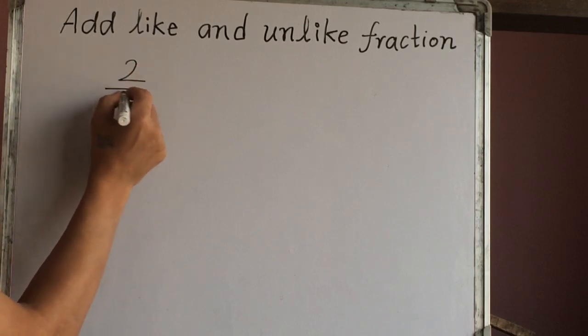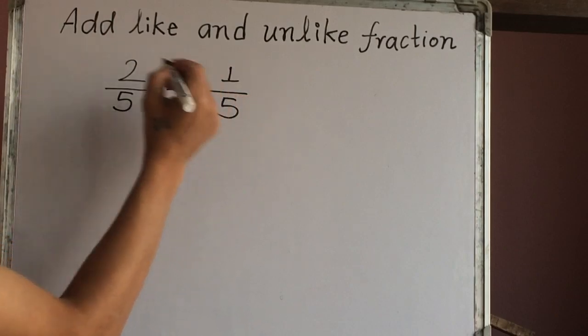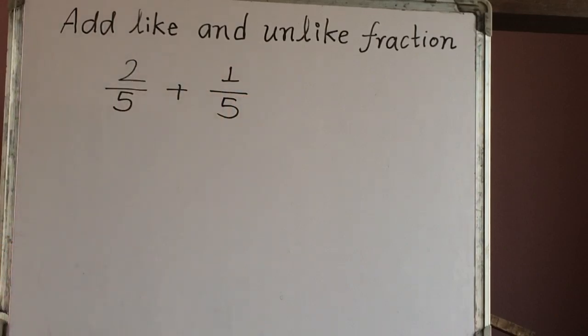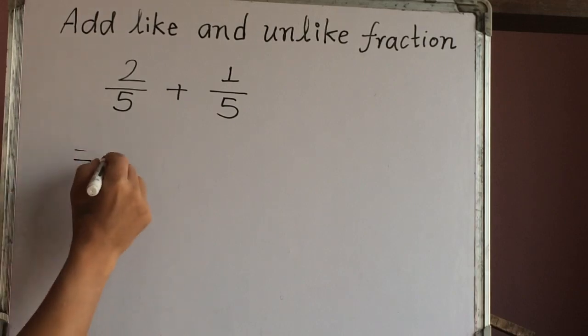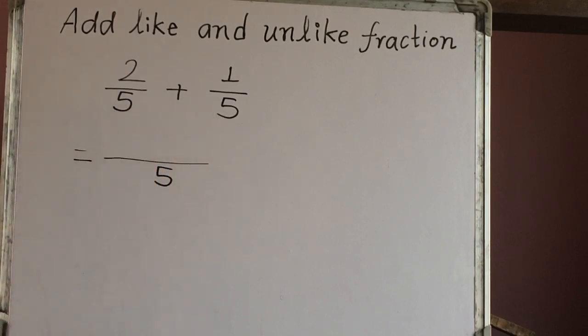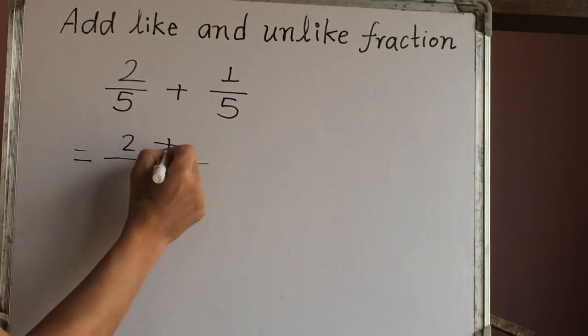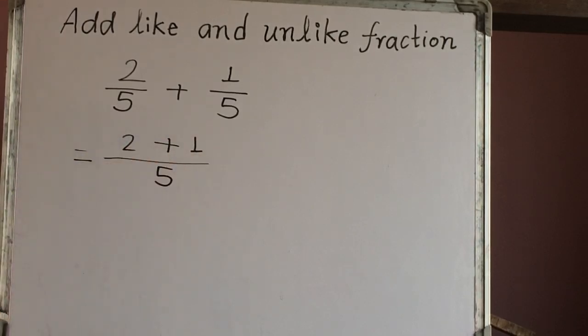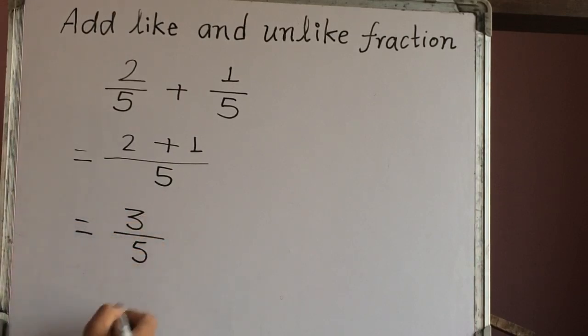2 out of 5 plus 1 out of 5. This is like fraction because we have same denominator here. At first we have to make one fraction line. So same denominator, that's why we have only one 5 common one. And we have 2 as the first numerator and 1 as the second numerator, which is 3 out of 5. This is proper fraction.